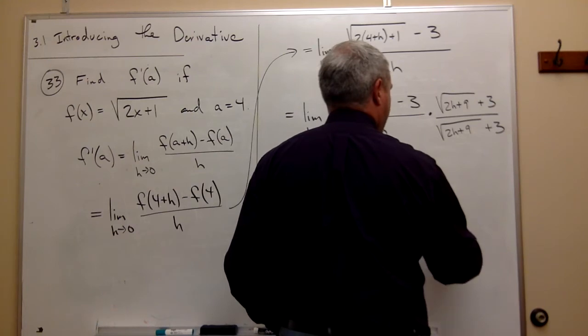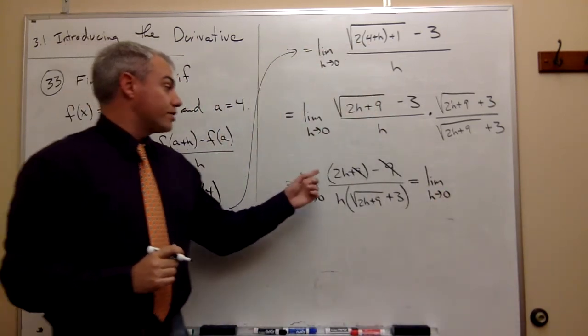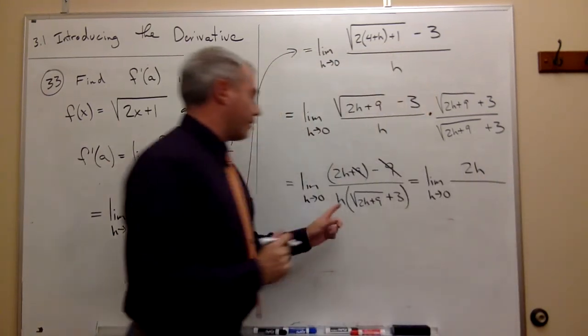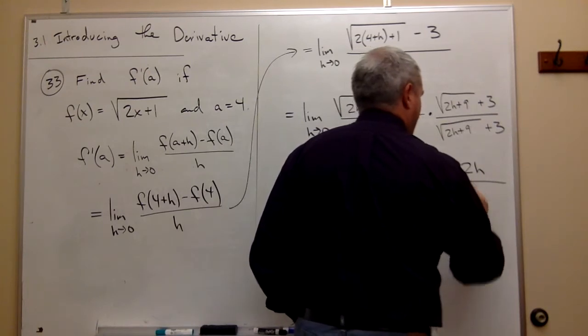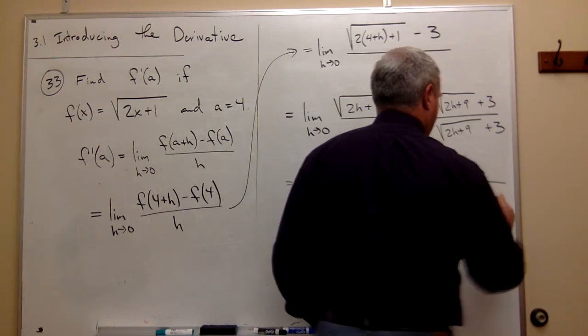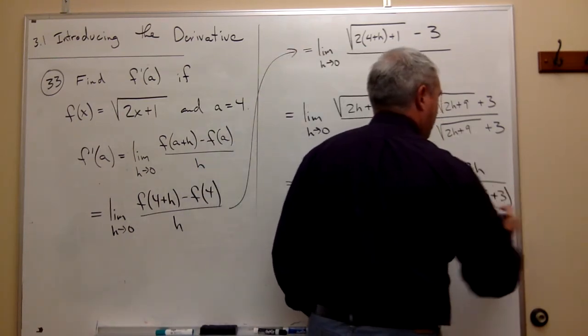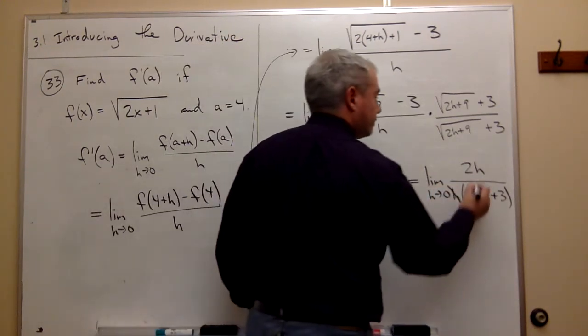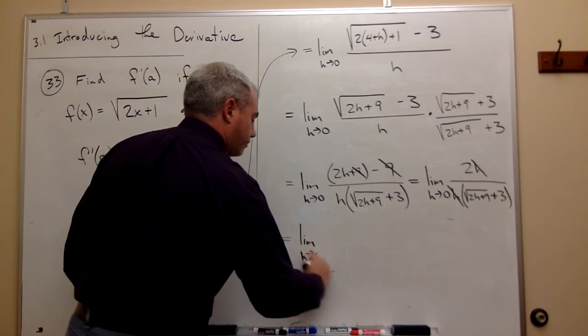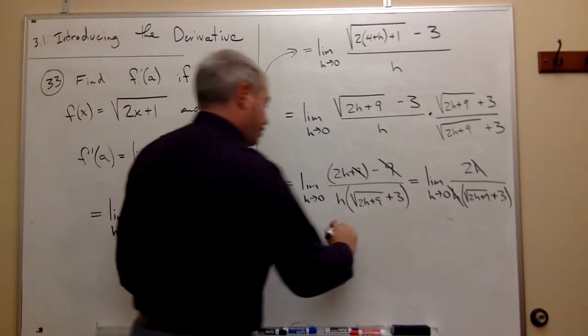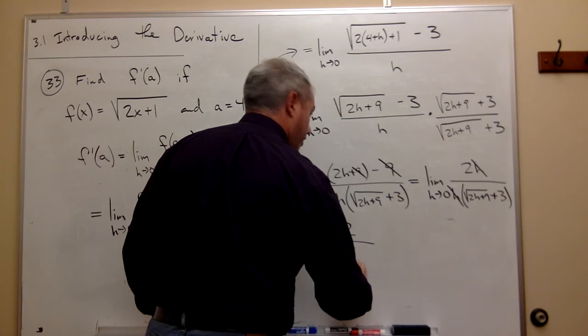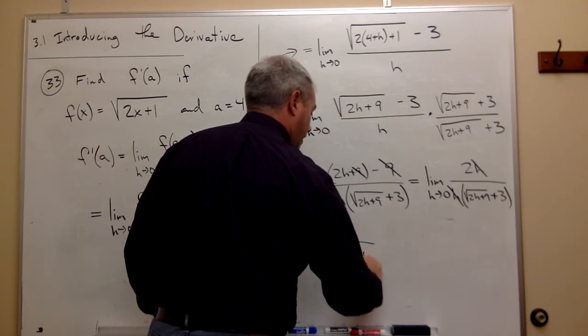The limit as h goes to 0 of on top I have 2h and on the bottom I have h times square root of 2h plus 9 plus 3. The h's cancel and I'm left with the limit as h goes to 0. On top I just have a 2 and on the bottom I have the square root of 2h plus 9 plus 3.